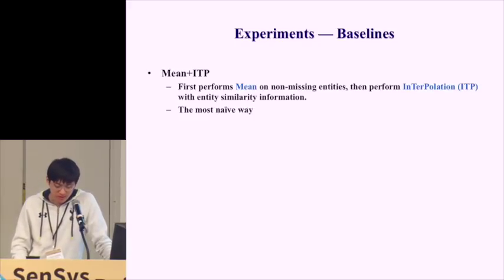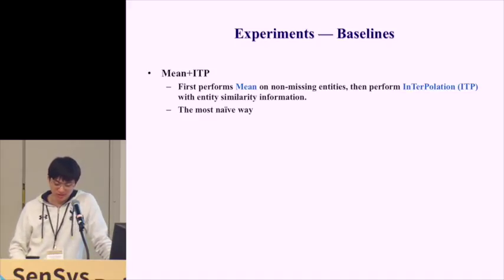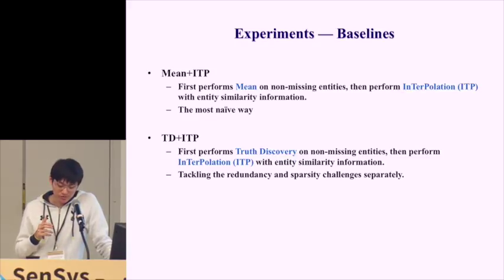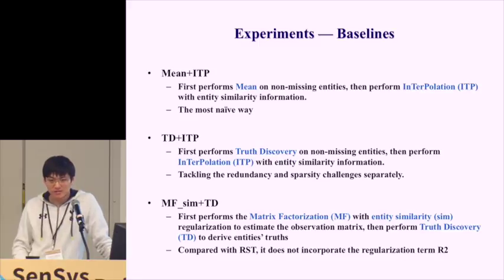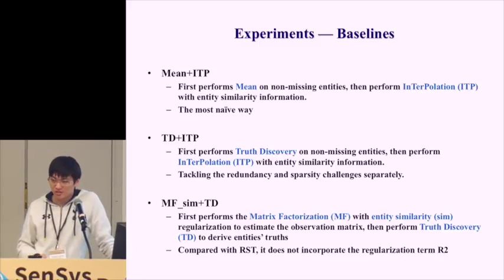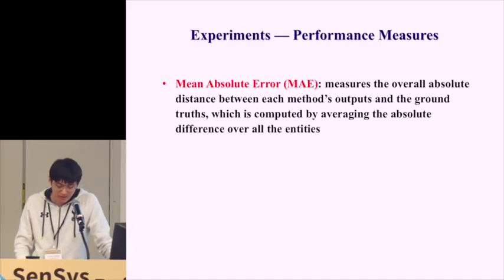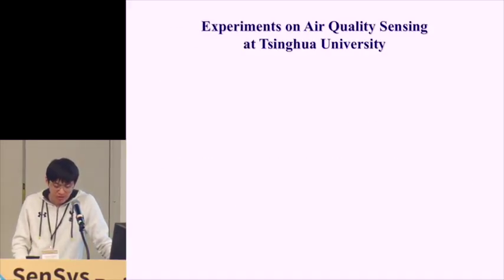For experiments, we use three baselines. The first is the most naive approach: compute the mean on non-missing entities, then apply interpolation. The second performs truth discovery first, then interpolation — tackling redundancy and sparsity separately. The third baseline is similar to the proposed method but does not consider virtual users' reliability, designed to show how the regularization term on virtual users affects estimation accuracy. Performance is measured by mean absolute error and root mean square error.